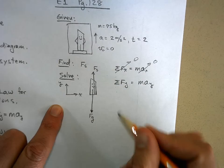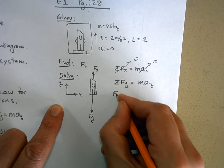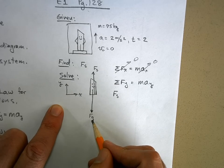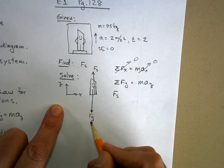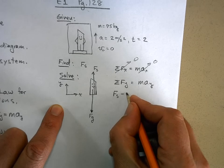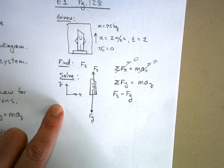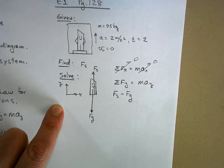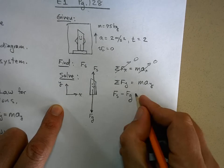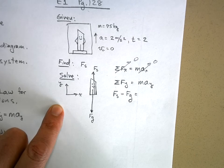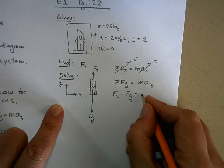Now sum the forces in the y direction equals ma in the y direction. Remember, you're adding vectors so direction matters. The scale force is in the positive direction, plus the weight — but the weight is in the negative direction, so I write minus the force of gravity. By putting that minus sign there, I've already indicated the direction. So don't also put in negative 9.8 — the minus sign already accounts for that. This equals ma.